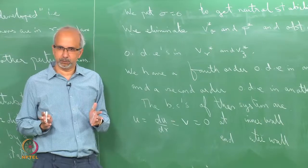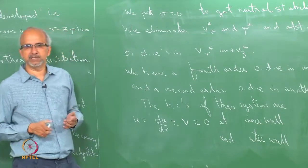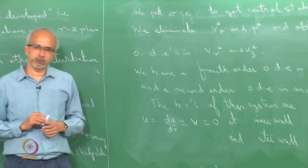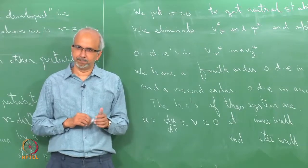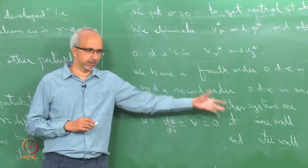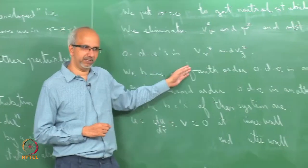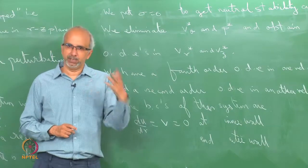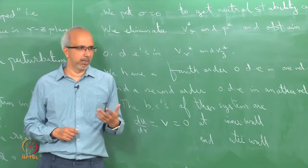For a fourth-order equation and a second-order equation, you need six boundary conditions — three at the inner wall and three at the outer wall. The boundary conditions are: u equals du/dr equals v equals zero at both walls (no-slip and no-penetration). The system is linear and homogeneous. Every term in the differential equations will contain u or its derivatives or v and its derivatives — there is no forcing source term.